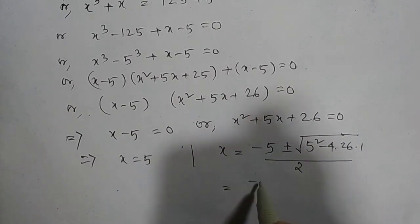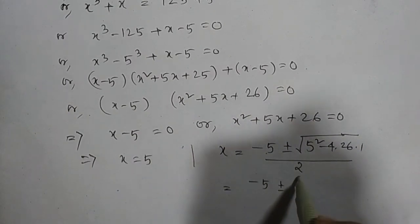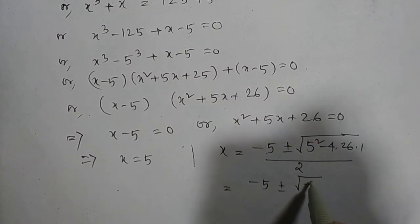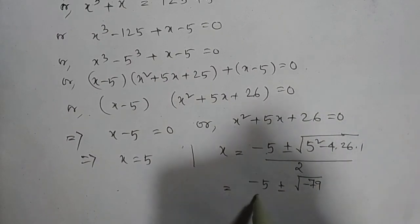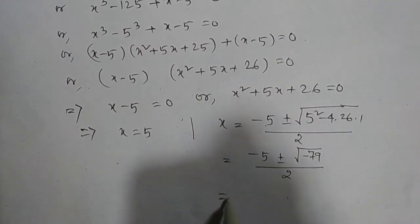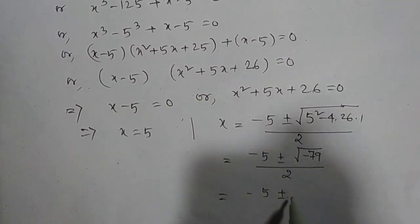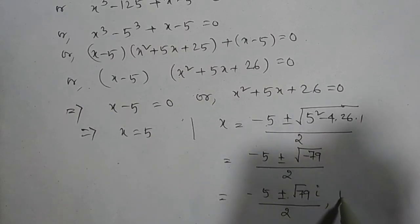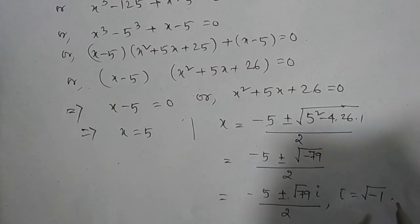This will be equal to (-5 ± √(-79))/2, which is equal to (-5 ± √79·i)/2, where i equals √(-1).